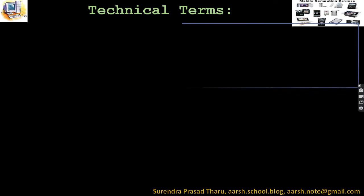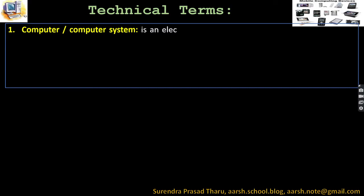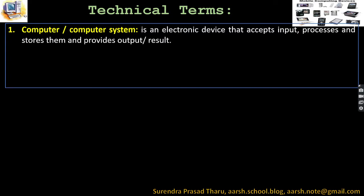Let's look at some specific definitions about the computer system. A computer system, or simply computer, refers to the same overall system. It is an electronic device — different from an electric device. Electric devices use direct electric power, like an electric fan. An electronic device uses different components and accepts input, processes and stores data, and provides output.